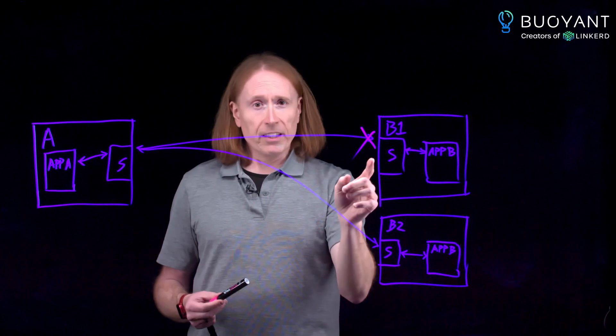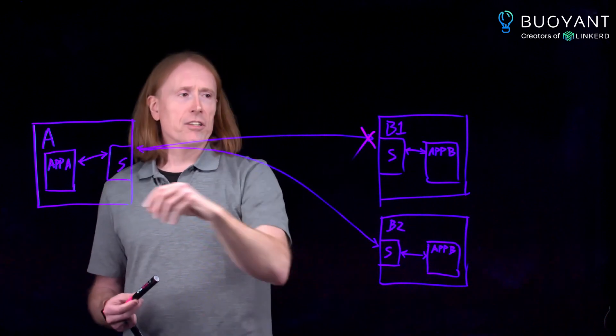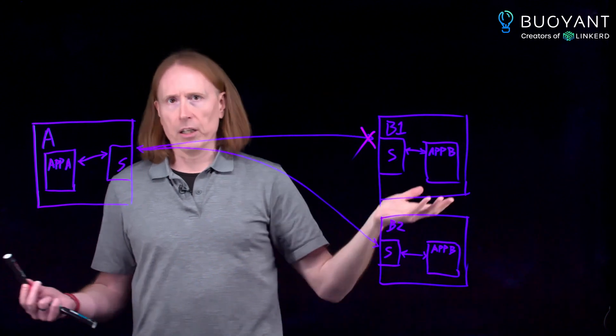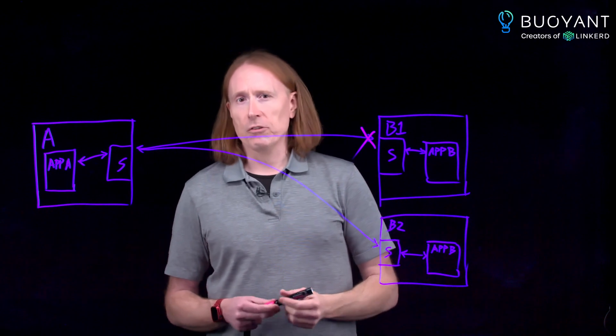Also, if it keeps failing, then the sidecar can surface that as a 502 instead of just having the connection break. And that can be a lot easier in terms of letting your application report something meaningful to the user.